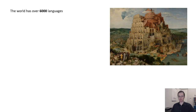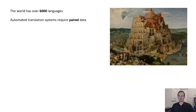The world has over 6,000 different languages. However, if we want to train a model to translate from one language to another — for example, for a machine translation system — we typically need paired data, meaning examples of sentences in one language and their corresponding translation to another. Such as 'I think therefore I am' in English, corresponding to 'je pense donc je suis' in French.